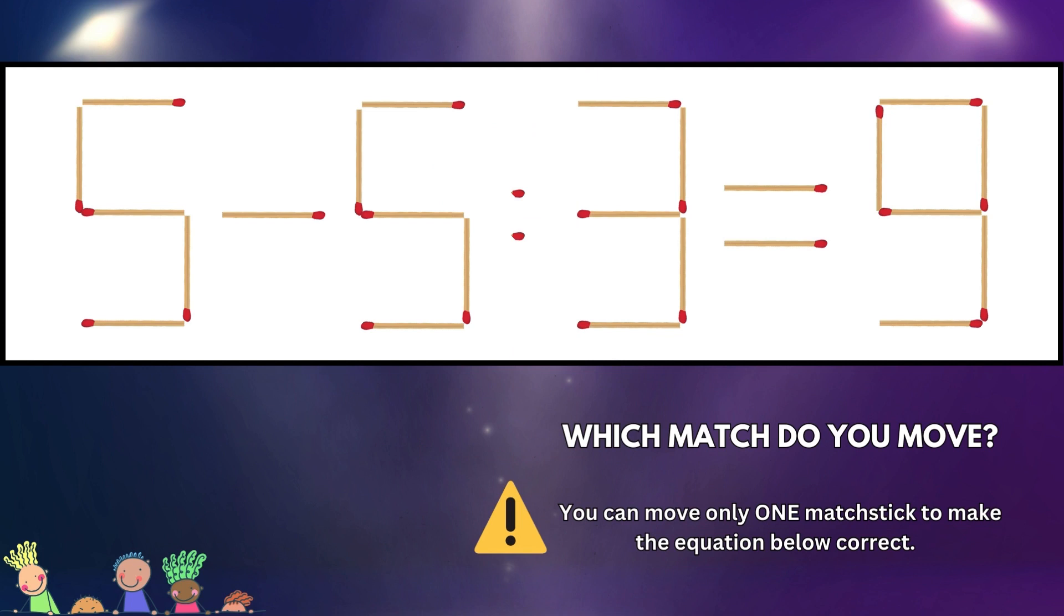Did you manage? Let's see. What you need to do is take the top left vertical matchstick from the nine and shift it over to the second 5 to make it a 6. Your new equation is going to read 5 - 6 ÷ 3 = 3.